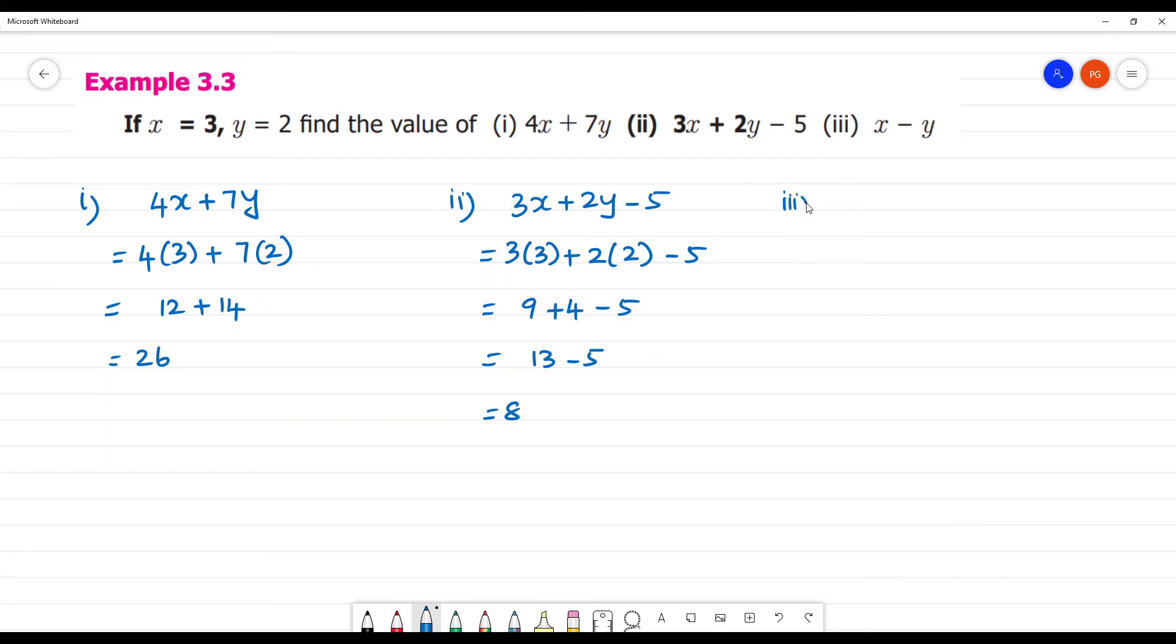Next is third one. Third one is how much? x minus y. So 3 minus 2. 3 minus 2 is 1.